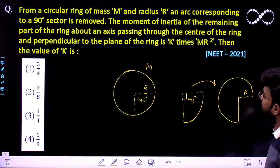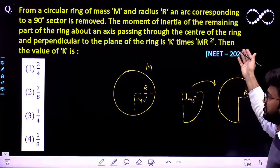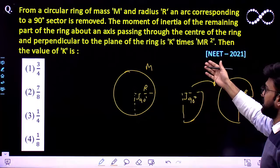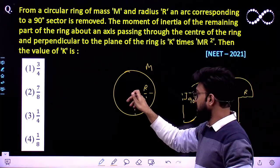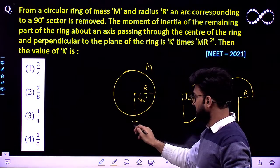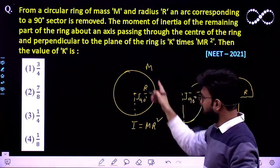The moment of inertia of the remaining part of the ring about an axis passing through the centre of the ring and perpendicular to the plane of the ring is K times MR². We also know that the moment of inertia along this particular point is given by the relationship MR², where M is the mass of this ring.